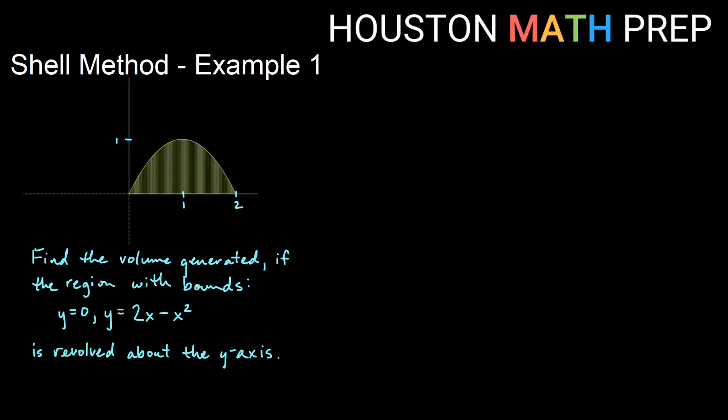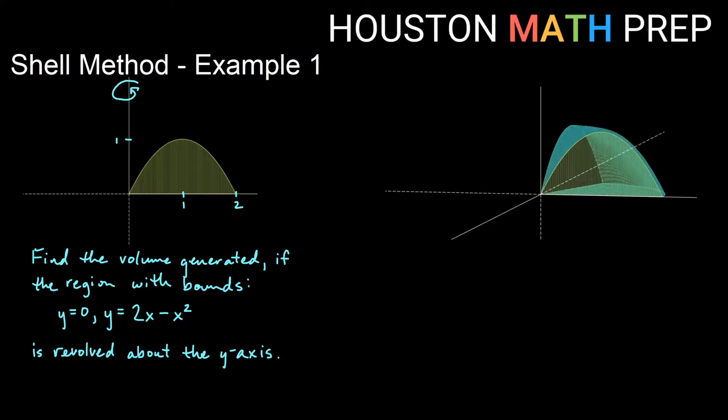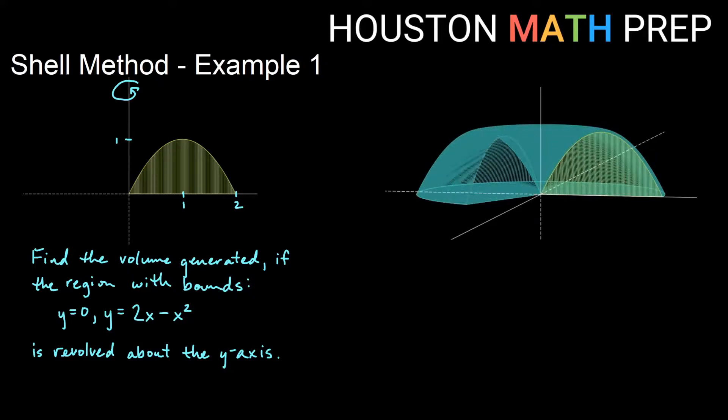Here we're going to be revolving this particular region that you see here about the y-axis, so we're going to go ahead and revolve spinning this way. We'll give you an idea of what the volume looks like. If you take this and revolve about y, we actually get something that looks like maybe a bundt pan or something that you might bake with.